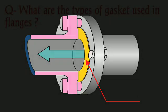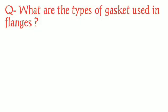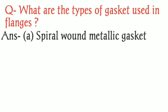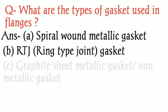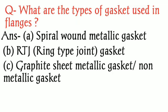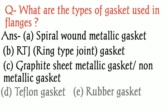The first question is: what are the types of gaskets used in flanges? The answer is: spiral wound metallic gasket, RTJ ring type joint gasket, graphite sheet metallic gasket, graphite sheet non-metallic gasket, Teflon gasket, rubber type gasket, and double jacketed gasket filled with graphite.